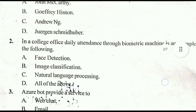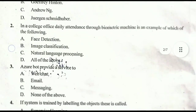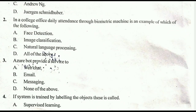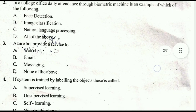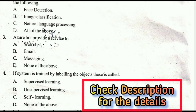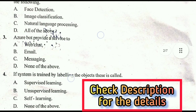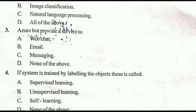Second question: in a college office, daily attendance through biometric machine is an example of which of the following? The correct answer is all of the above, option D. Third question: Azure AI Board provides which service? The correct answer is option C, messaging.